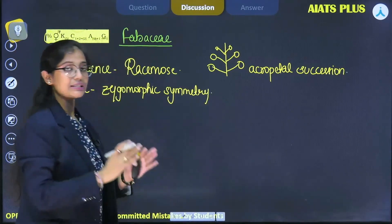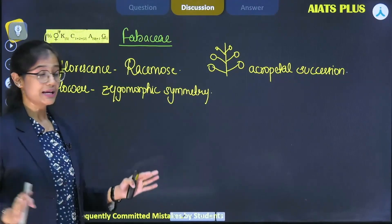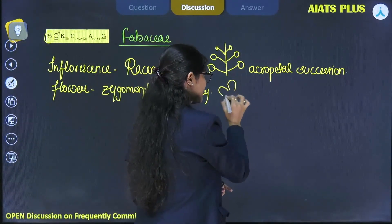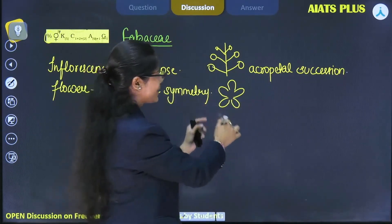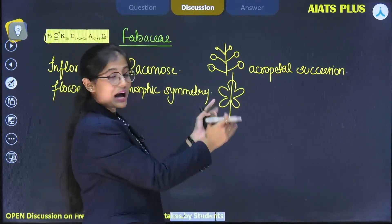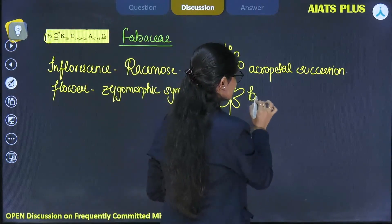A flower can be divided into two equal halves by only a single vertical plane. This is a type of flower in which we can divide it into two equal parts by only a single line, not more than that. This is also known as bilateral symmetry.